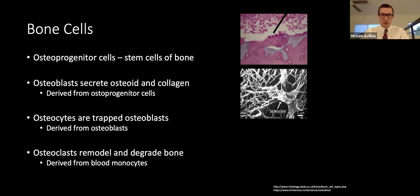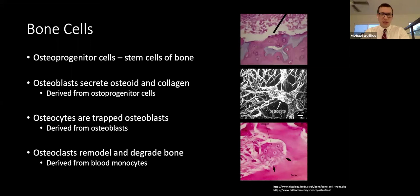Osteoclasts are large multi-nucleated cells with a ruffled border that resorbs bone matrix. They are not derived from osteoprogenitor cells — they actually derive from blood monocytes, which are derived from hematopoietic cells in the bone marrow.